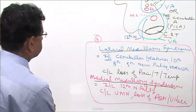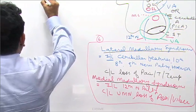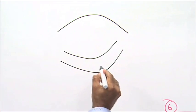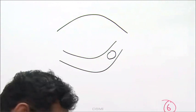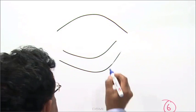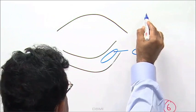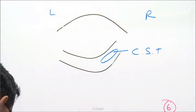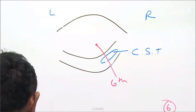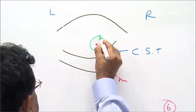Now we move on to the pons. First we draw the diagram. Here is the corticospinal tract, this is the right side, this is the left side. Here is the sixth nerve, and here comes the seventh nerve — it goes around the sixth nerve nucleus and comes back out like this.